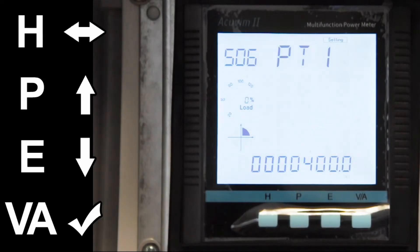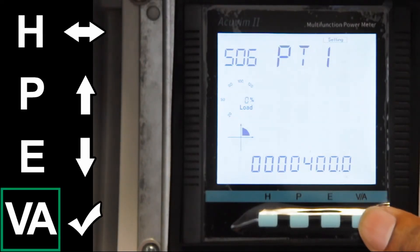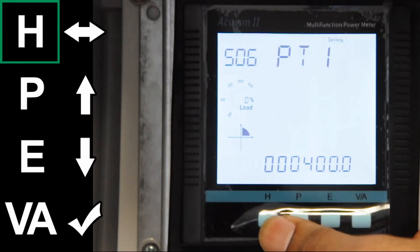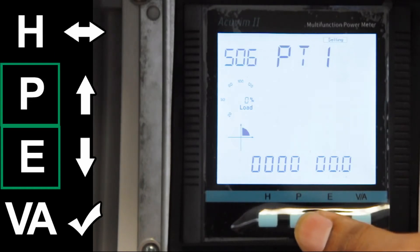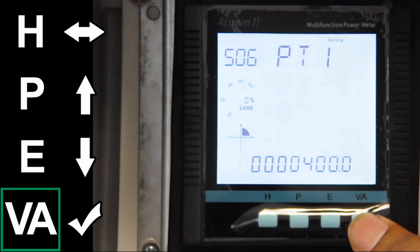To configure your PT, press VA to enter into the setting. Use H to shift the cursor to the desired digit, and use P and E, P to increase and E to decrease to the desired value. When finished, press VA to exit the session.